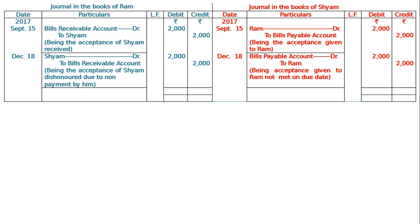The bill will be dishonored. The journal will be totaled by two entries amounting to Rs. 4000. When the bill is dishonored, this will be the entry. And this is the whole solution.